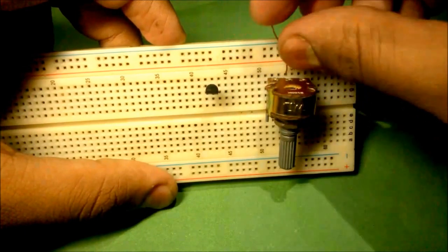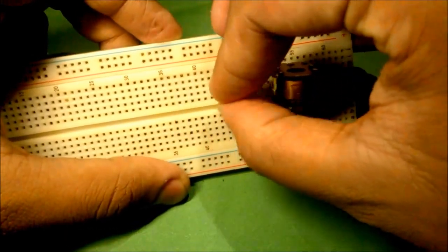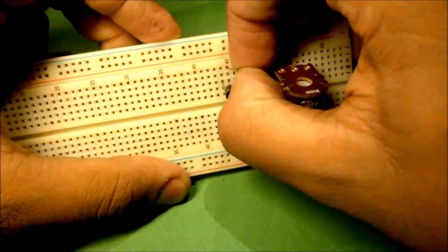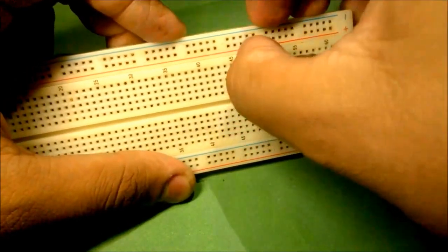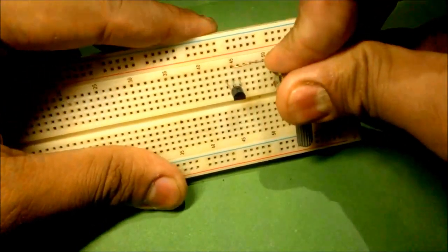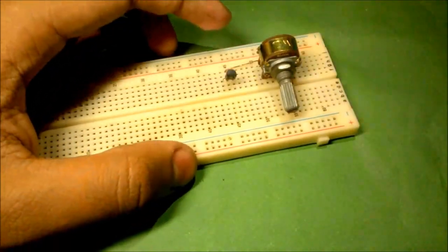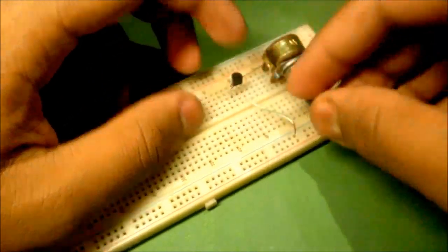Now connect the middle part of the pot to the base of the NPN. Now connect the emitter pin to the ground.